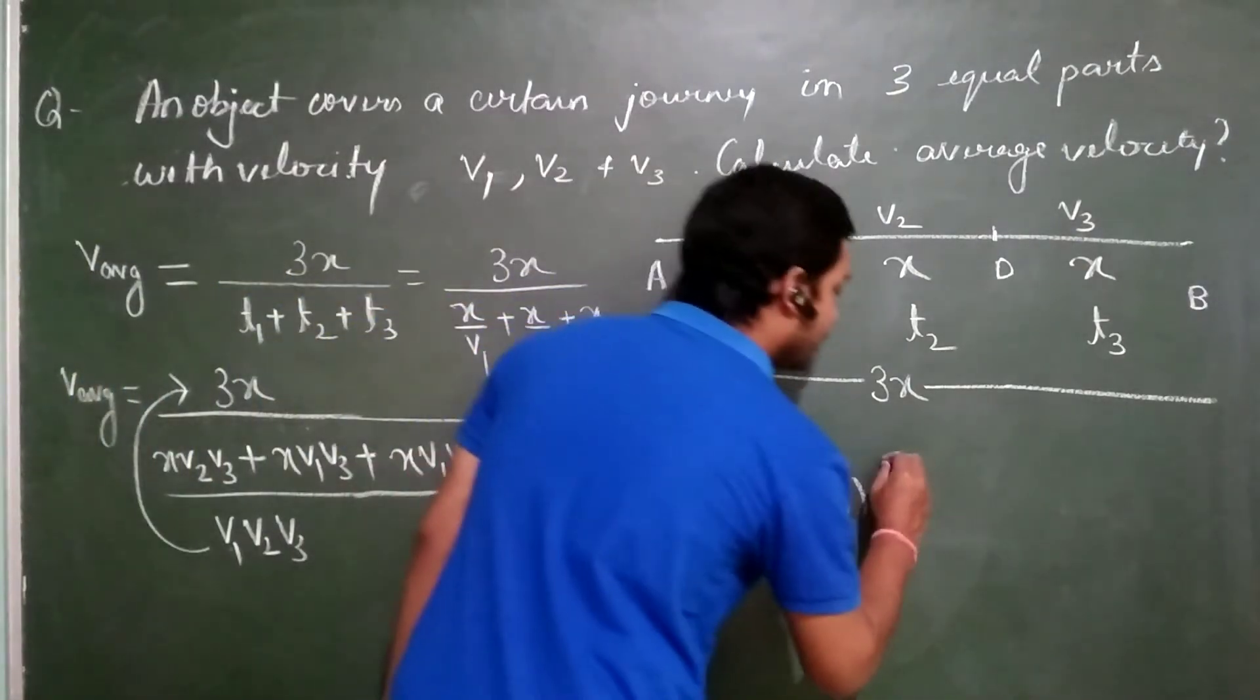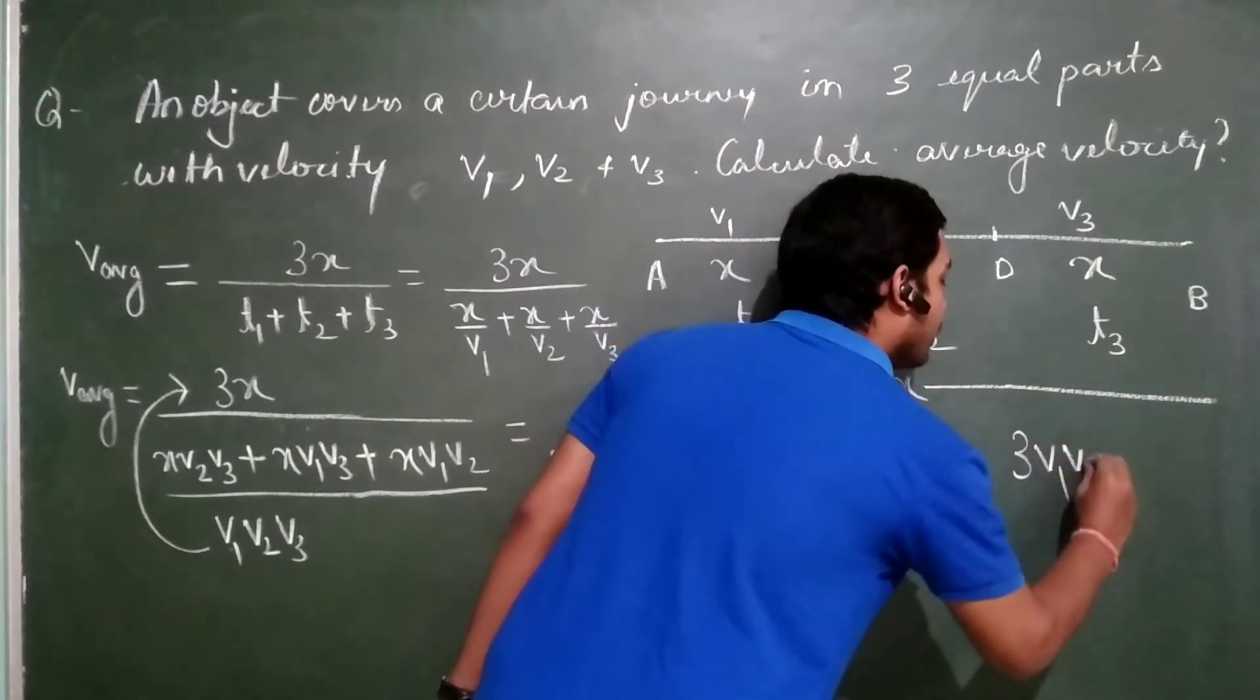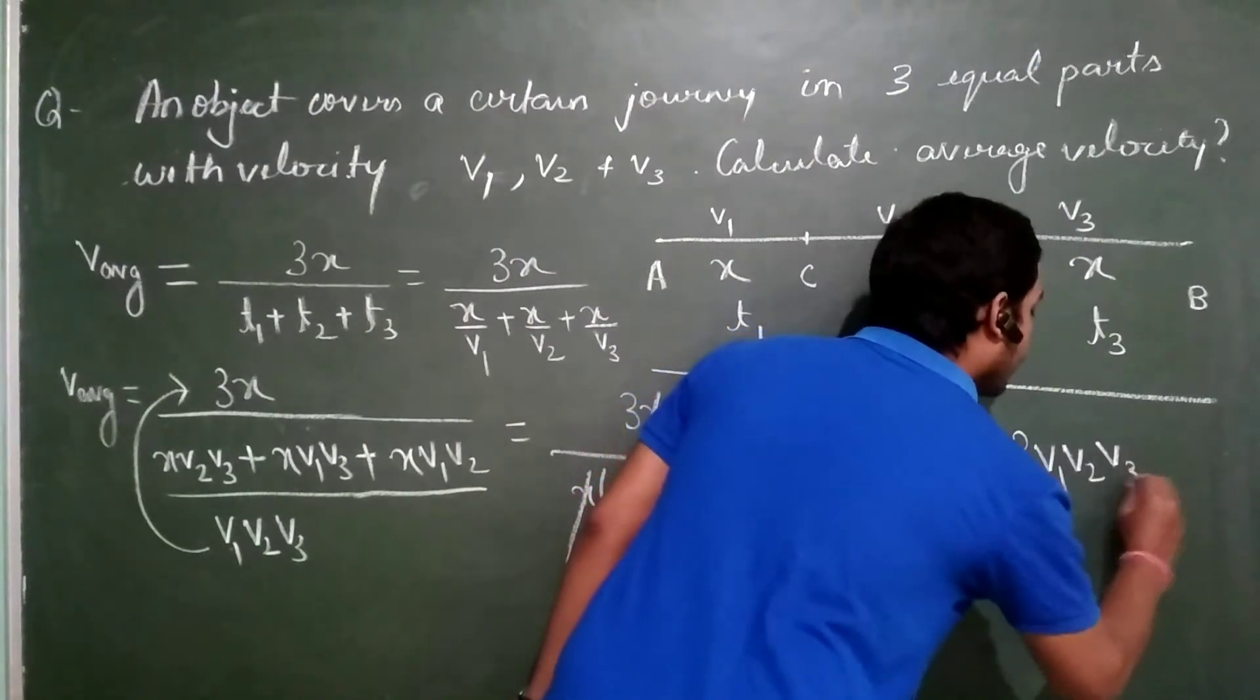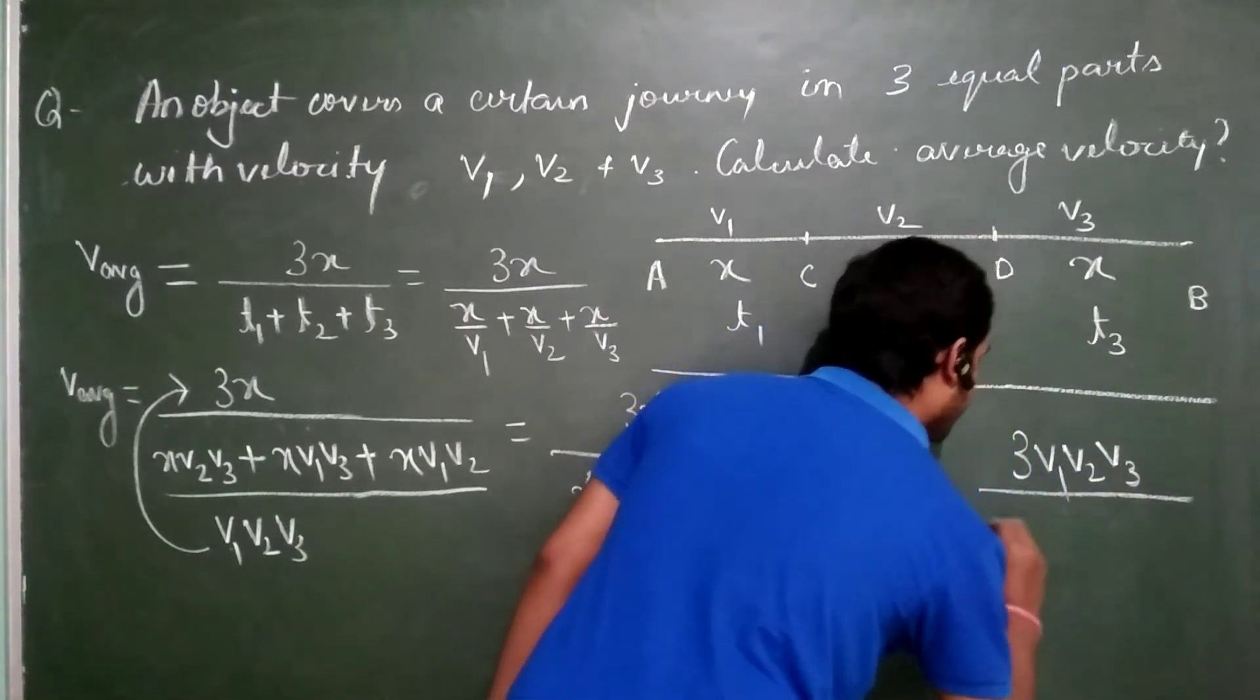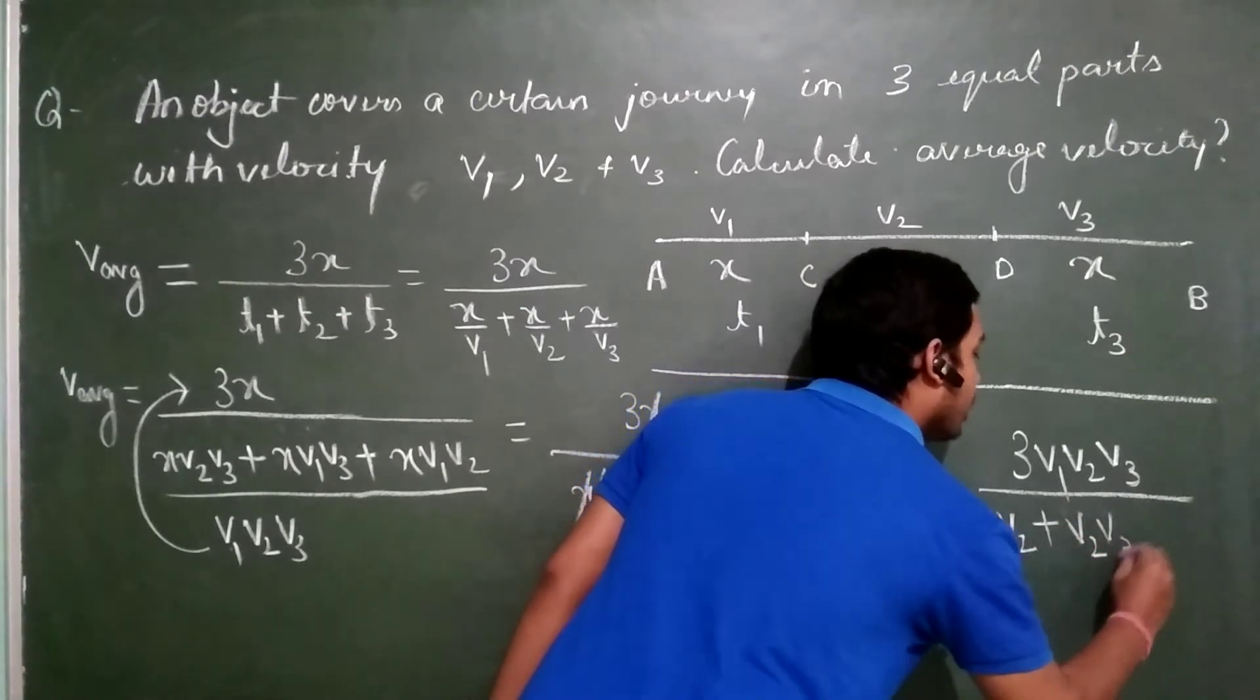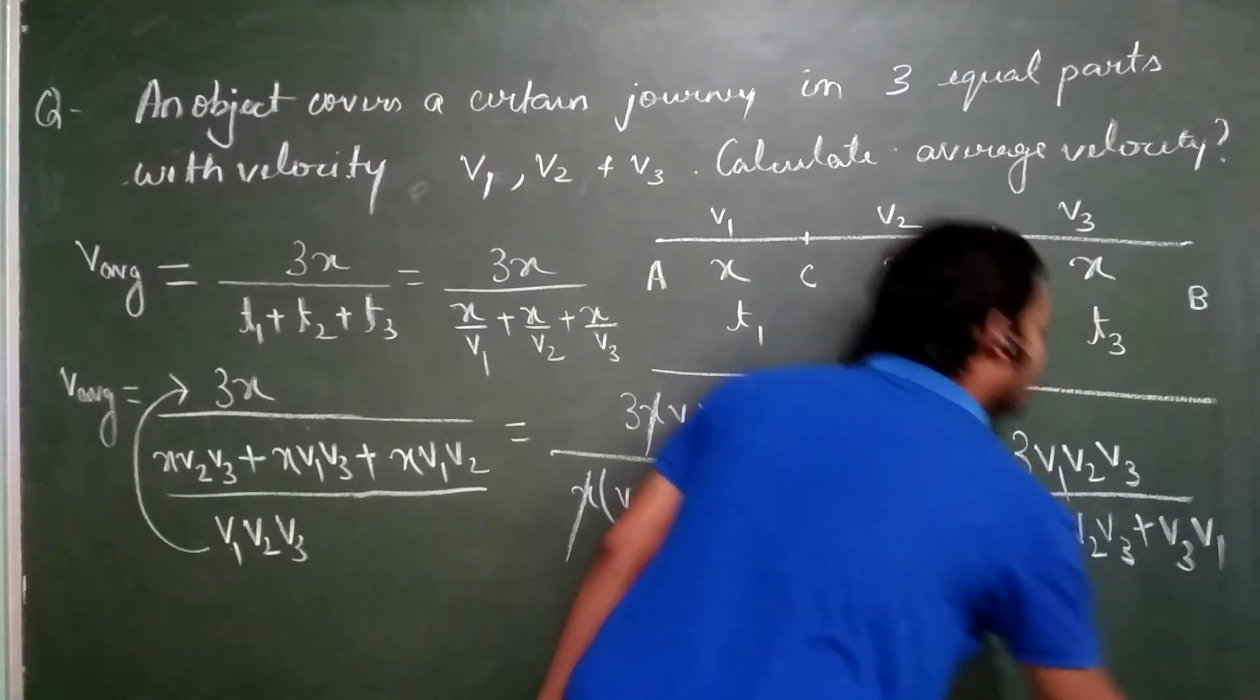The final answer is 3 V1 V2 V3 upon V1 V2 plus V2 V3 plus V3 V1.